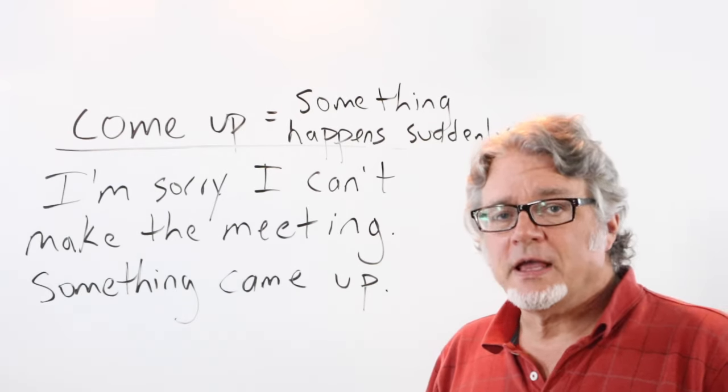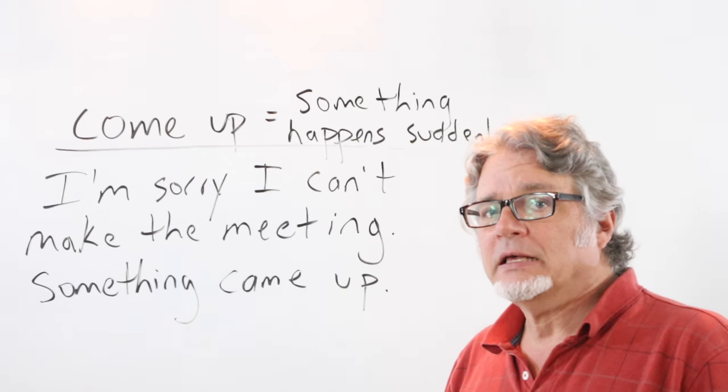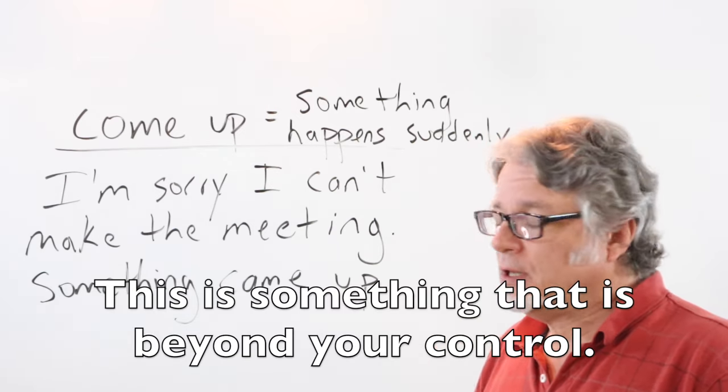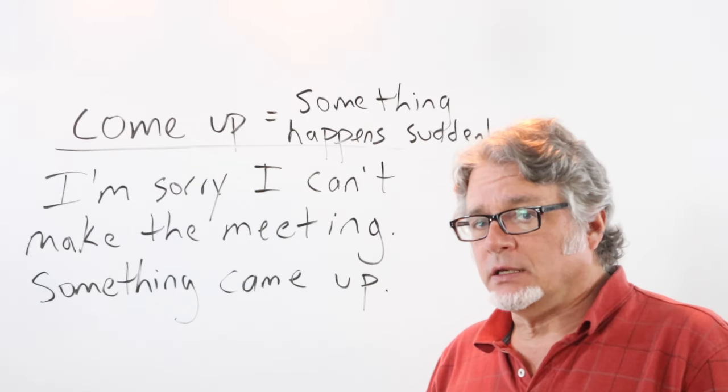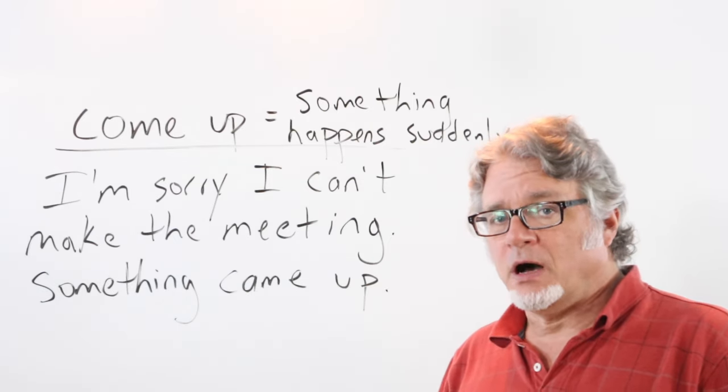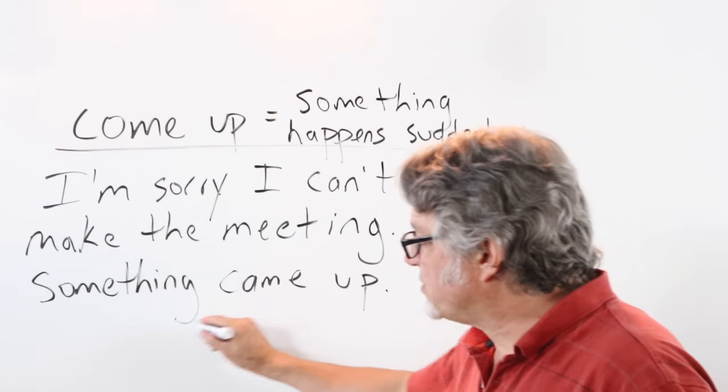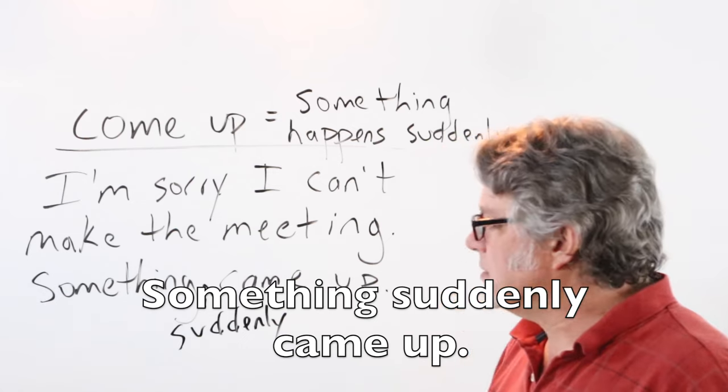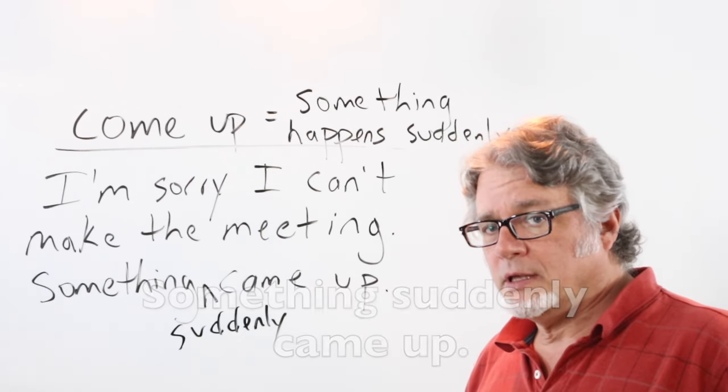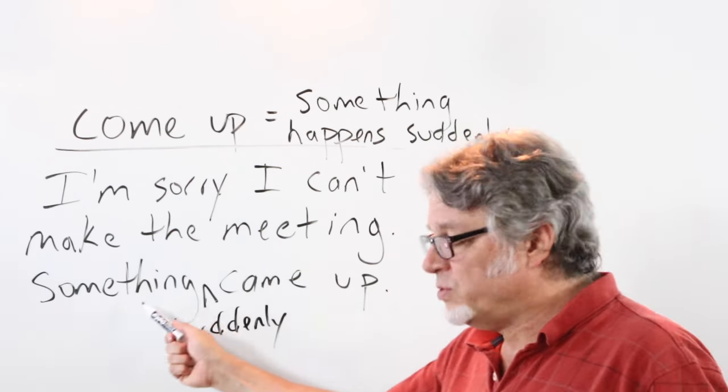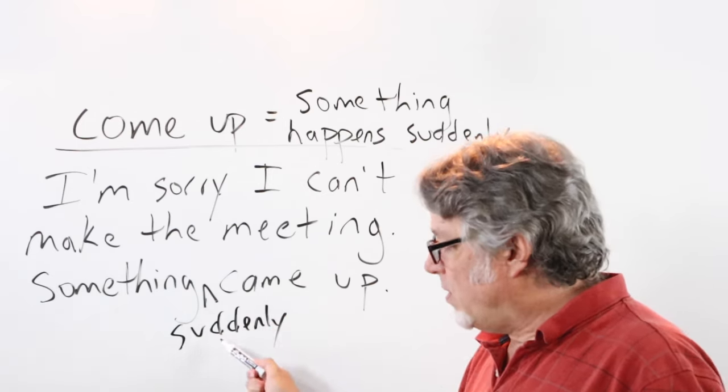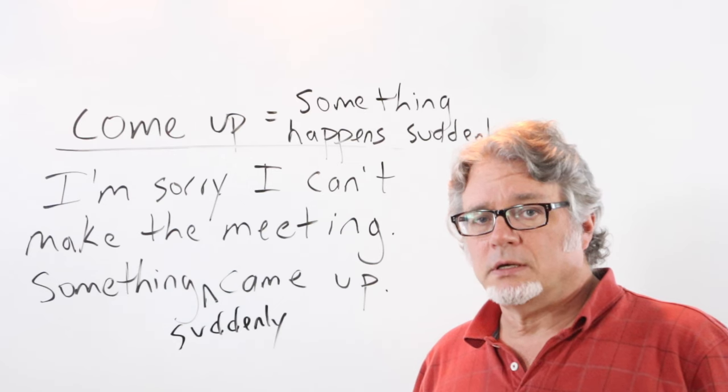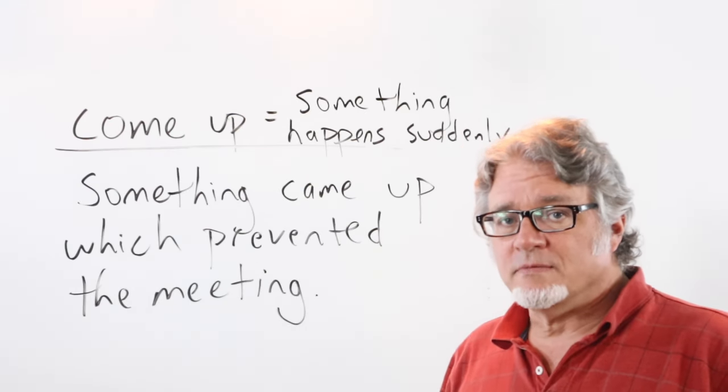Use come up when something happens suddenly. This is something that is beyond your control. I'm sorry, I can't make the meeting. Something came up. Or you could put the word suddenly right here. Something suddenly came up. And it's not necessary to explain exactly what that is. This is all you have to say. Something suddenly came up. Something came up which prevented the meeting.